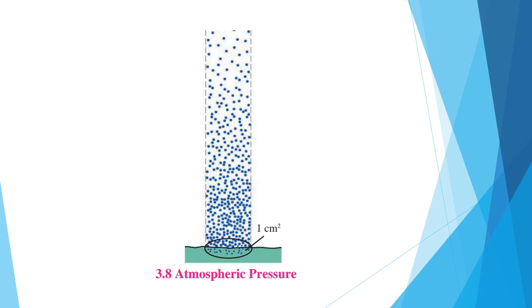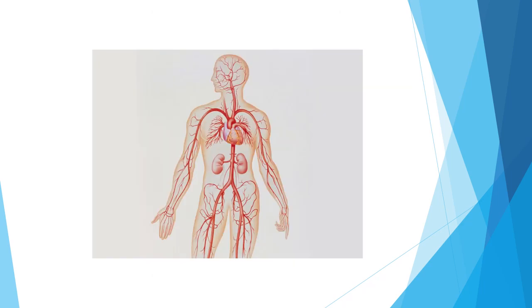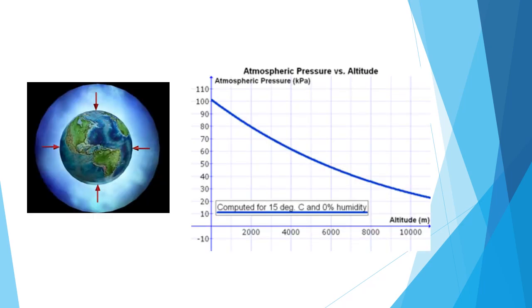We constantly bear the atmospheric pressure on our heads. However, the cavities in our body are also filled with air. Arteries and veins are filled with blood. Therefore, we do not get crushed due to atmospheric pressure as the pressure is balanced. The earth's atmospheric pressure decreases with height from the sea level as shown in the figure.